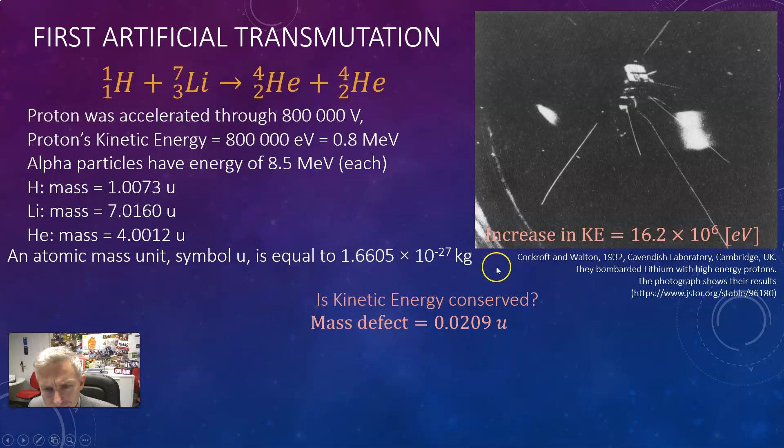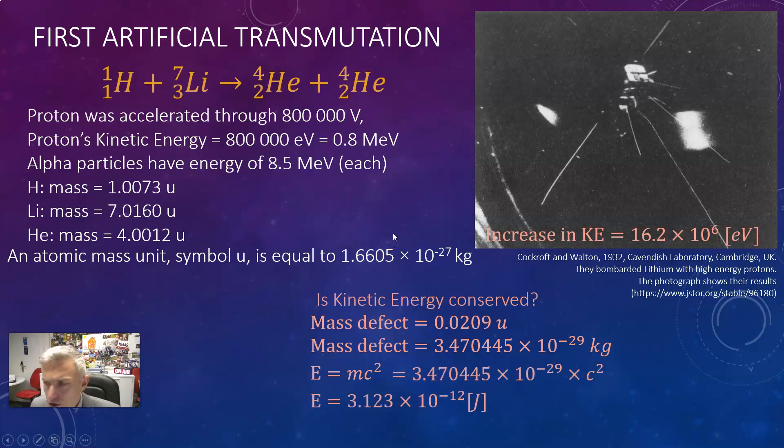Now let's take that mass defect convert it into kilograms with the conversion factor and then apply E equals mc squared and you will see that I gain 3.1 times 10 to the minus 12 joules. Converting that into electron volts gives 19.5 mega electron volts.